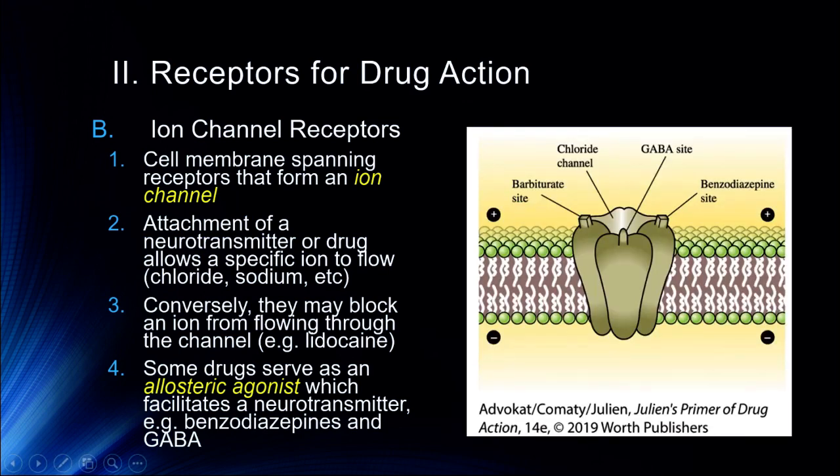Looking at GABA along with benzodiazepines and barbiturates — when we discuss those drugs later, this is the receptor we'll be talking about. If a benzodiazepine like Xanax binds here, it makes it more likely that the chloride channel will be open, further hyperpolarizing the inside of the cell.